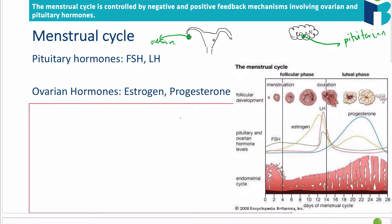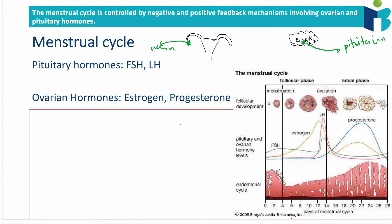The cycle is typically a 28-day cycle, and it controls menstruation — specifically, when the female releases an egg cell that could potentially be used to reproduce.